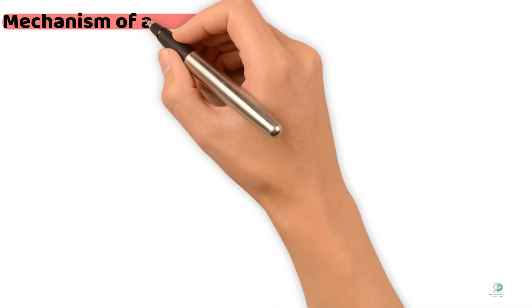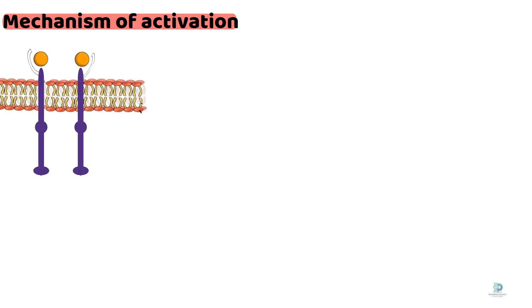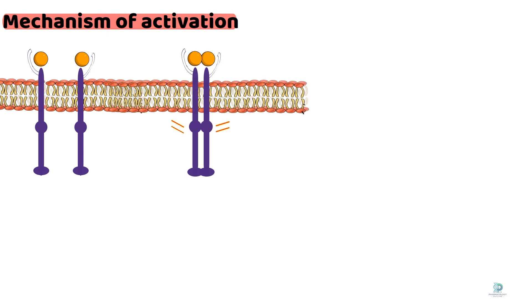Now, let's discuss the mechanism of activation. When a ligand binds to the extracellular domain of a receptor tyrosine kinase, receptor dimerization occurs, leading to autophosphorylation of tyrosine residues in the intracellular domain.